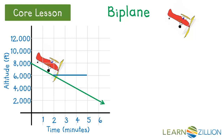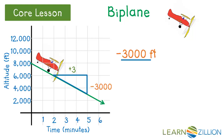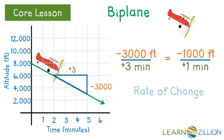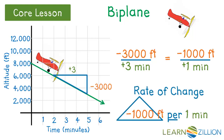The input increases 3 minutes — remember to include the plus sign. As 3 minutes pass, the plane goes down 3,000 feet — negative 3,000. This is where including the negative sign is critical because it tells you the direction of the line. When we calculate the rate of change, the output goes on top: the change in output, negative 3,000, over the change in input, plus 3 minutes, simplifies to negative 1,000 feet per 1 minute. That's our rate of change. The negative tells us that the line and the plane are going down.